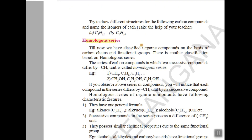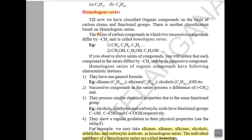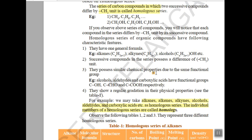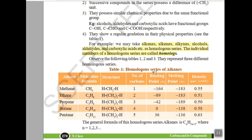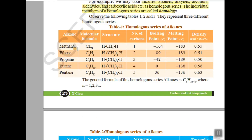Next we have homologous series. Homologous series is a series of carbon compounds where two successive compounds have a difference of CH2. The best examples are alkanes, alkenes, alkynes, alcohol, and aldehyde — these are all examples of homologous series.